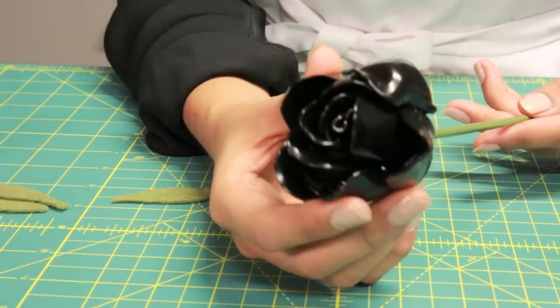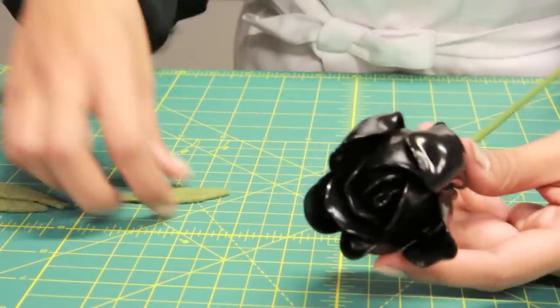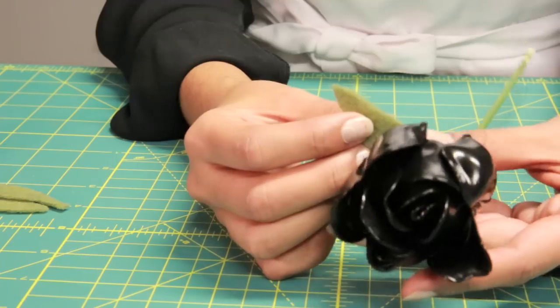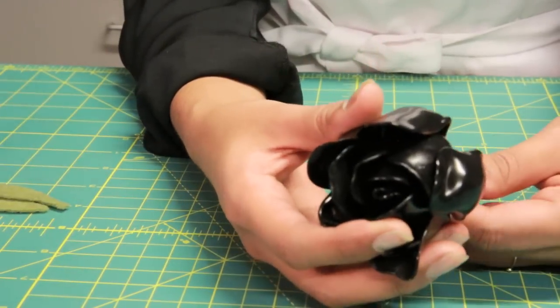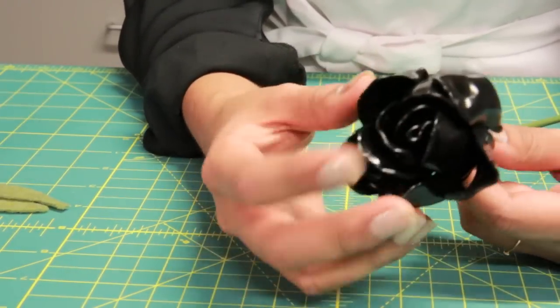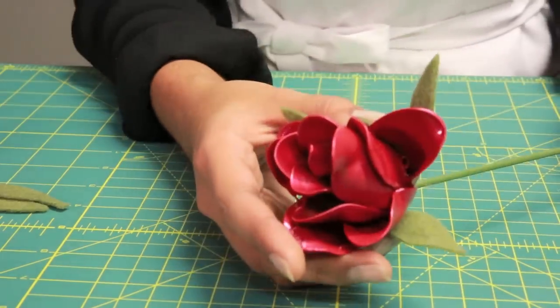Once you've attached all your petals, you're just going to want to attach the leaves if you use colored spoons. If you did not use colored spoons like I did, you're going to want to spray paint it and then attach the leaves. I already spray painted this one.